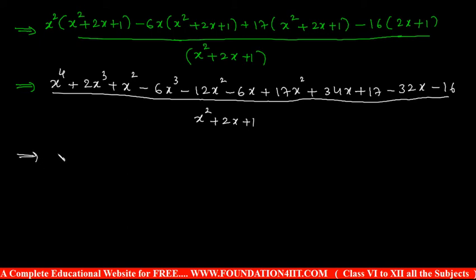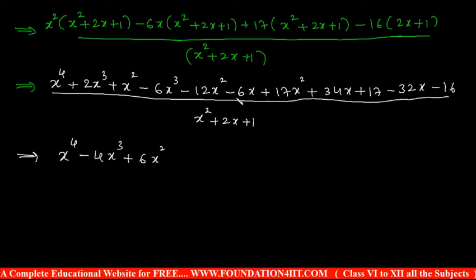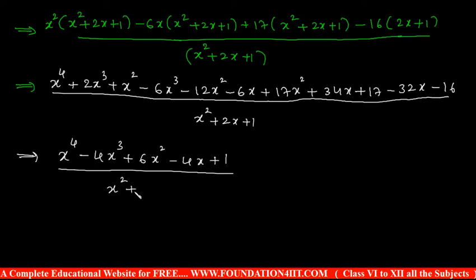Now the numerator can simplify by making like terms. x to the power 4 — cube terms: 2x cubed minus 6x cubed is minus 4x cubed. x squared terms: x squared minus 12x squared plus 17x squared is plus 6x squared. x terms: minus 6x minus 32x plus 34x is minus 4x. And constant: 17 minus 16 is 1. So the numerator is x to the power 4 minus 4x cubed plus 6x squared minus 4x plus 1, divided by x squared plus 2x plus 1.